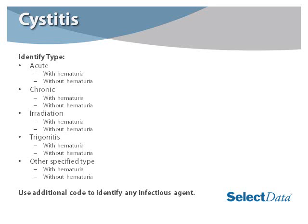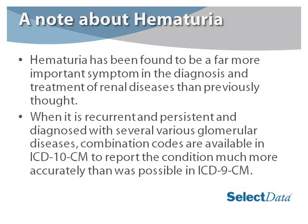With cystitis, we must identify the type. Is it acute, with or without hematuria? Is it chronic, with or without hematuria? Is it due to irradiation, with or without hematuria? Is it trigonitis, with or without hematuria? Or is it another specified type, without or with hematuria? We need to use an additional code to identify any infectious agent. Hematuria has been found to be a far more important symptom in the diagnosis and treatment of renal diseases than previously thought. When it is recurrent and persistent and diagnosed with various glomerular diseases, combination codes are available in ICD-10 to report the condition much more accurately than was possible in ICD-9.